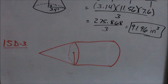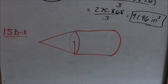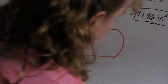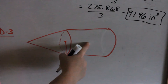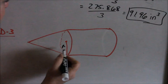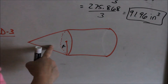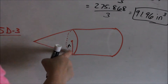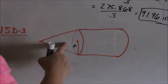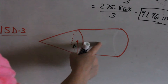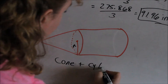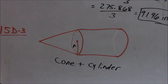Looking at 15D3, you have a composite figure that is a cone and a cylinder. Take the volume of the cone and add the volume of the cylinder together. The radius for the cone is going to be the same as the radius for the cylinder — the radii are the same. So take the volume of the cone plus the volume of the cylinder, and that will be your total volume.